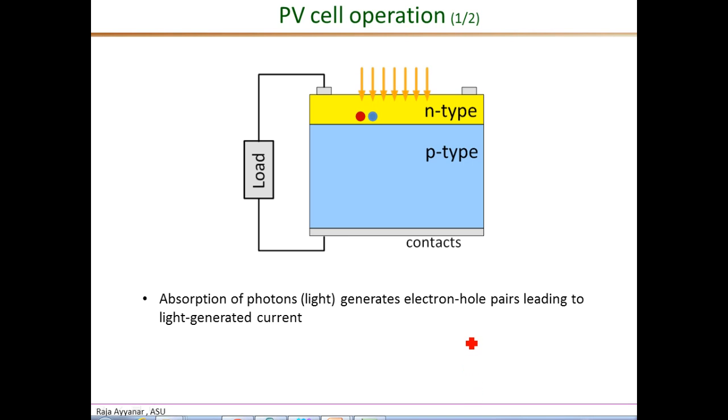Now when the energy of the incident photon from the sunlight is higher than the energy of the band gap of the material, then it can release an electron from the valence band into the conduction band. And in the process forming a free electron hole pair. And this happens both in the N-type as well as in the P-type material.